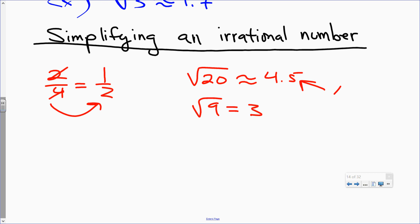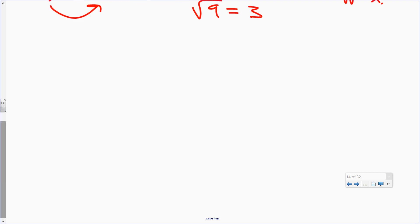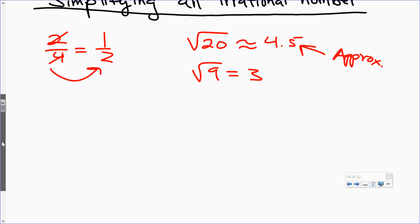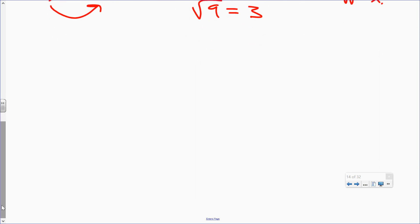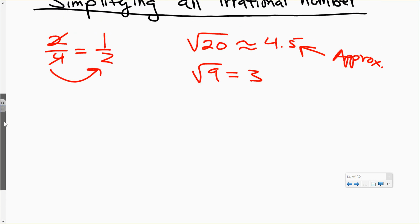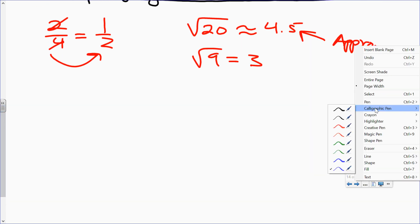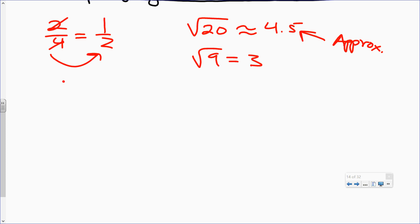Even though approximating square root of 20 is approximately 4.5, what I'm going to do is show you how to simplify the square root of 20, and not leave it as an approximate. And some of you may have seen this before. So let's get into example one.